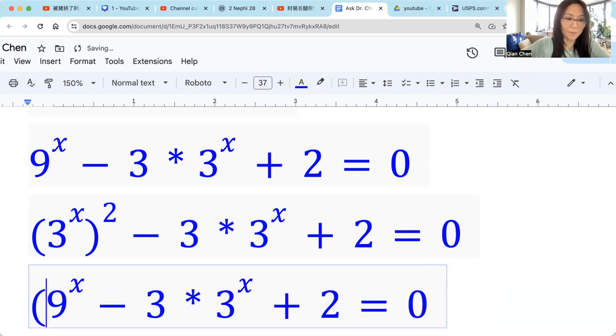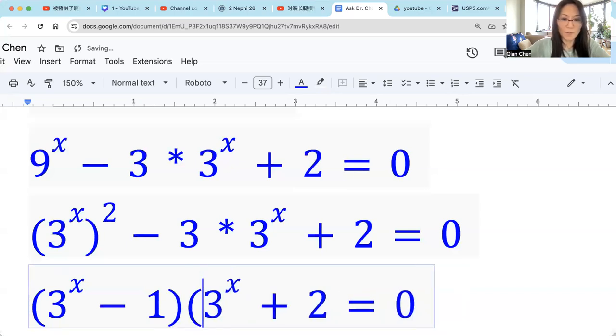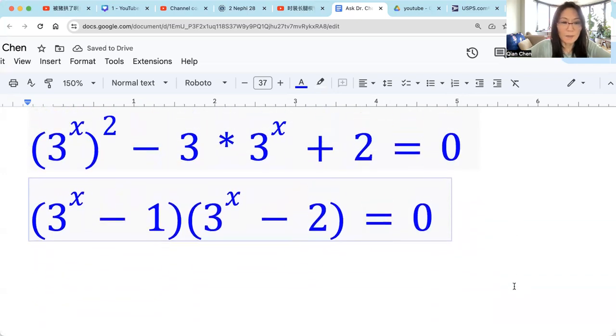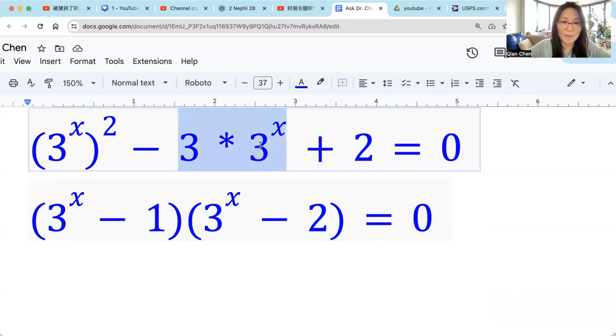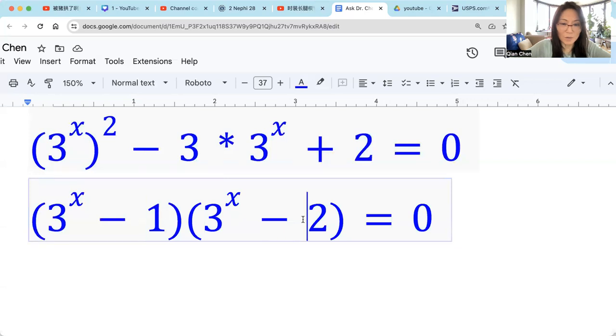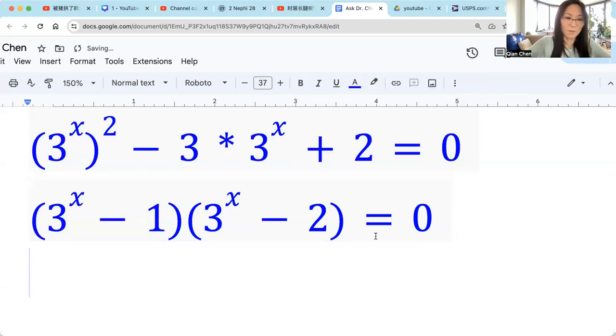We can factor it as 3 raised by x minus 1. That's one factor. Then 3 raised by x minus 2. Let's check. So 3 raised by x times 3 raised by x. That's 3 raised by x squared, which is 9 raised by x. Then we have negative 1 times 3x. We have 3x times negative 2. So negative 1 plus negative 2. That's negative 3 times 3 raised by x. That's our middle term. Then negative 1 times negative 2. That's positive 2. All right.